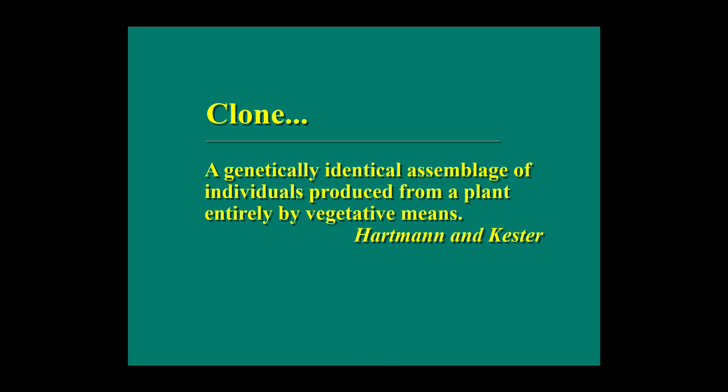What is a clone? A clone is a genetically identical assemblage of individuals produced from a plant entirely by vegetative means. We make a clone that is identical to the parent by vegetative means, because in vegetative propagation genetic recombination does not happen. So the progeny produced is an identical copy of the parent.